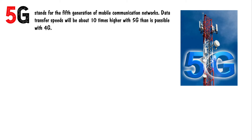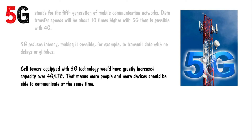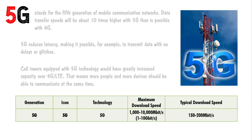5G stands for the fifth generation of mobile communication networks. Data transfer speed will be about 10 times higher with 5G than is possible with 4G. 5G reduces latency, making it possible to transmit data with no delays or glitches. Cell towers equipped with 5G technology would have greatly increased capacity over 4G or LTE, meaning more people and more devices can communicate at the same time. The maximum download speed of 5G is 1 to 10 Gbps, while typical download speed is 150 to 200 Mbps.